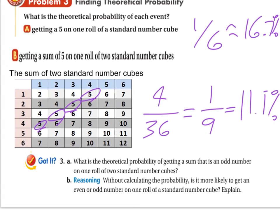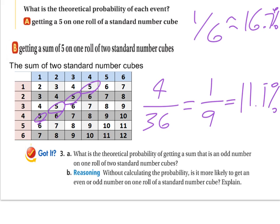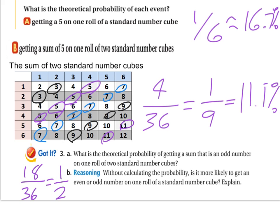Looking at a couple of other problems, what is the theoretical probability of getting a sum that is an odd number on one roll of two standard number cubes? We've got different odd-numbered sums here. We've got threes, the fives we already have circled, sevens, nines, and 11 is the highest odd sum. If we count those up, there's actually 18 different ways to get an odd sum out of 36 possible. You might have guessed this ahead of time. That's one-half, which would be 50%. So without even calculating, is it more likely to get an even or odd number on one roll of a standard number cube? There's really three outcomes for each, so they are exactly equal. 50% chance.